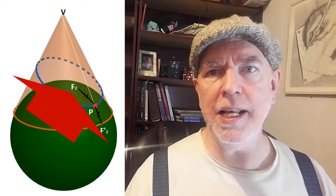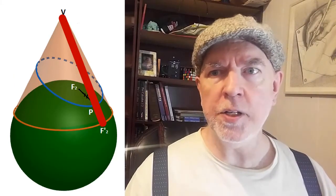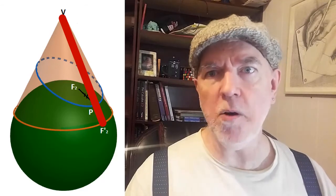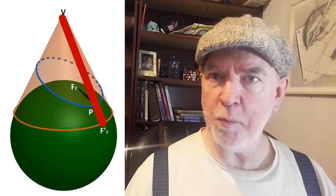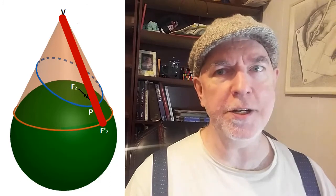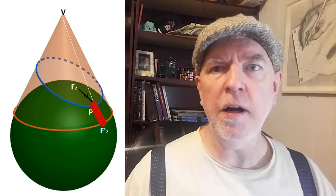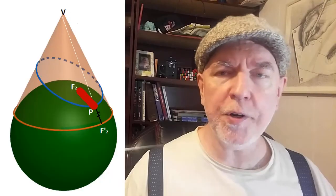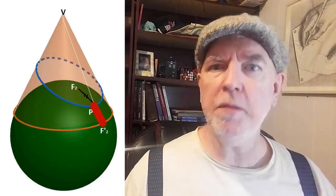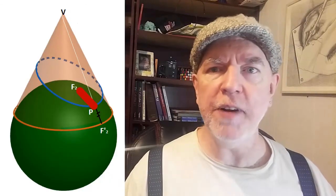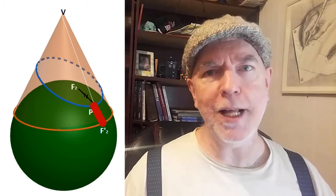Extend the segment PV until it meets that lower sphere and we'll call that point of intersection F2 prime. As before, PF2 and PF2 prime will both be tangent to the sphere and therefore both have the same length.